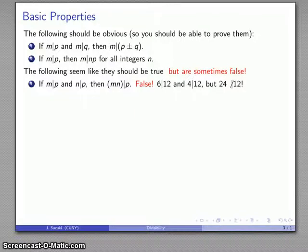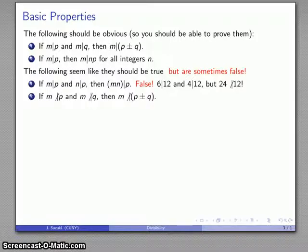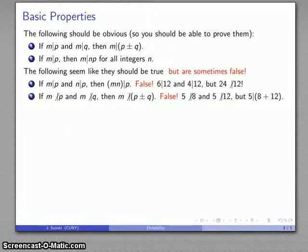Another property we think should be true, but is not always true, is that if M does not divide P, and M does not divide Q, then M shouldn't divide the sum or difference of the two. And that's actually the inverse of this property, which actually is true, that if M divides something, and M divides something else, M will divide the sum or difference. Now, if M doesn't divide, is it possible that it doesn't divide the sum or difference? Well, again, this is false. This is not something we can rely on. 5 does not divide 8, 5 does not divide 12, but if I look at 8 plus 12, that's 20, 5 does in fact divide 20.